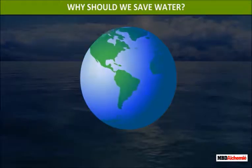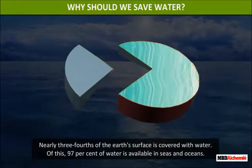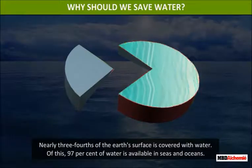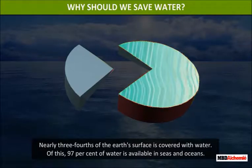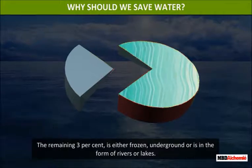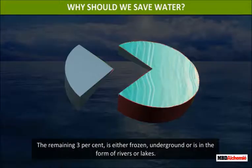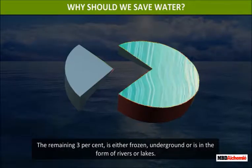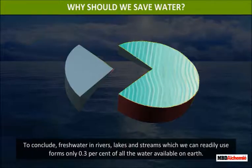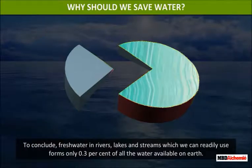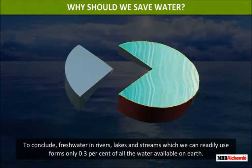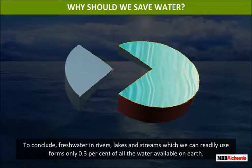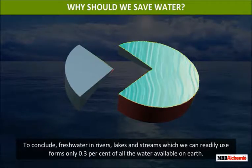Why should we save water? Nearly three-fourths of the earth's surface is covered with water. Of this, ninety-seven percent is available in seas and oceans. The remaining three percent is either frozen, underground, or in the form of rivers or lakes. Fresh water in rivers, lakes, and streams which we can readily use forms only 0.3 percent of all the water available on earth.